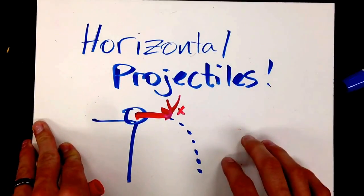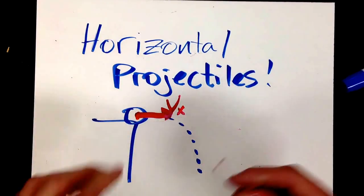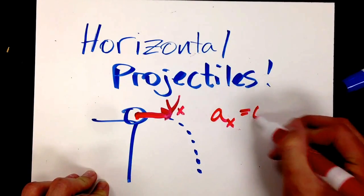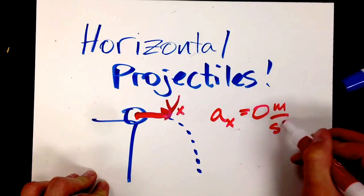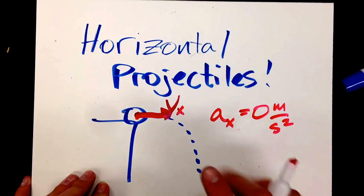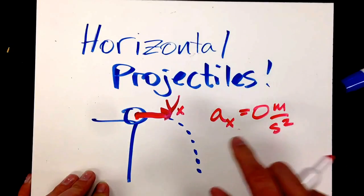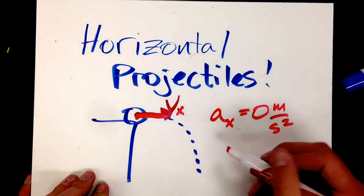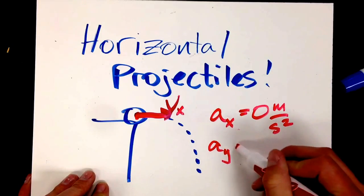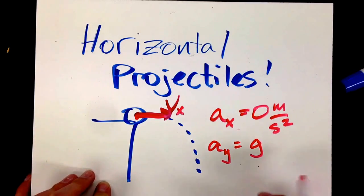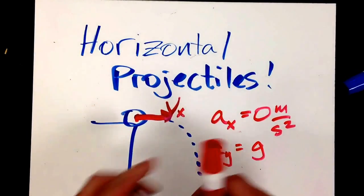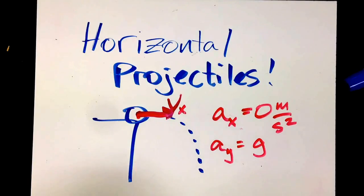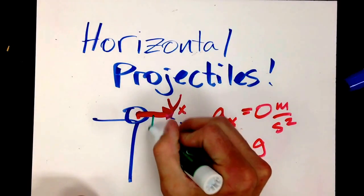Some key assumptions we're going to make: one is that the acceleration in the x direction is going to be zero, because we're going to neglect air resistance. When the ball rolls off, the instant it leaves the table, it has an acceleration in the y direction of g — whatever gravity is on that planet, that's the acceleration. That acceleration is always directed down.